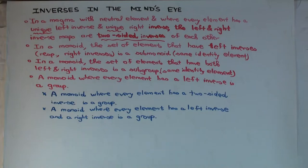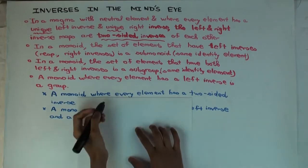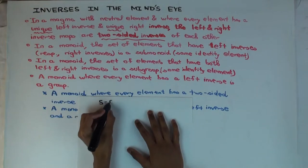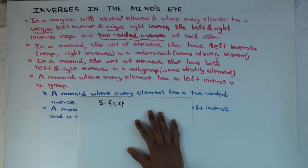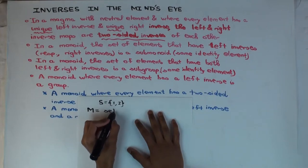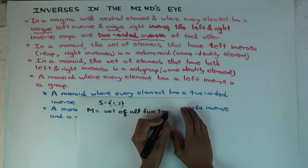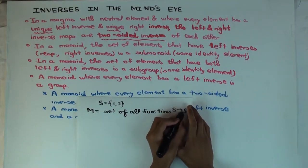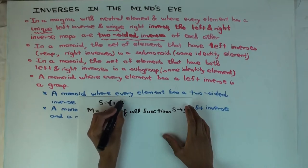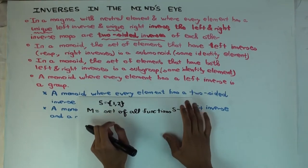Let me take an example of a monoid and an element which has a left inverse but not a right inverse. Let's take a set S = {1, 2}, and M is the set of all functions from S to S. How many such functions are there? It's 2 squared — 4. You can send 1 to either 1 or 2, and 2 to either 1 or 2. So M has size 4.